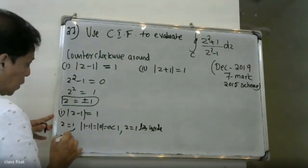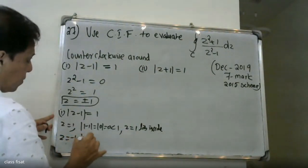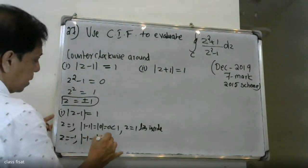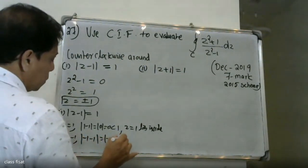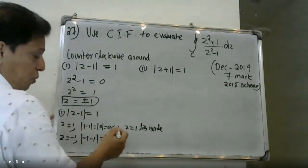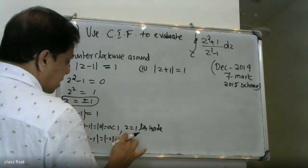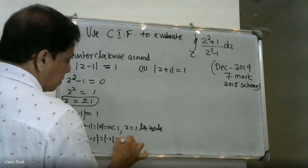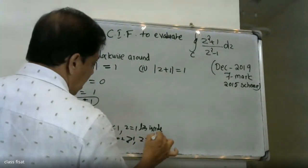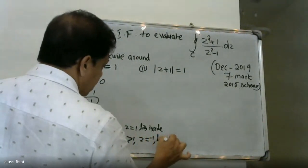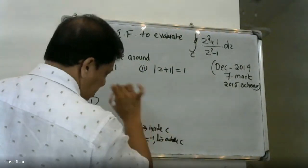Now check z = -1: |-1 - 1| = |-2| = 2, which is greater than 1. Therefore z = -1 lies outside the contour C.